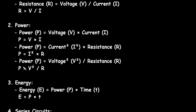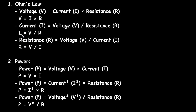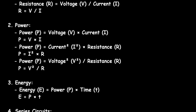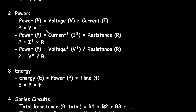We can rewrite this as power is equal to V squared by R. Here we can replace I with V by R. So if we put I is equal to V by R, then we get power is equal to voltage squared upon resistance.